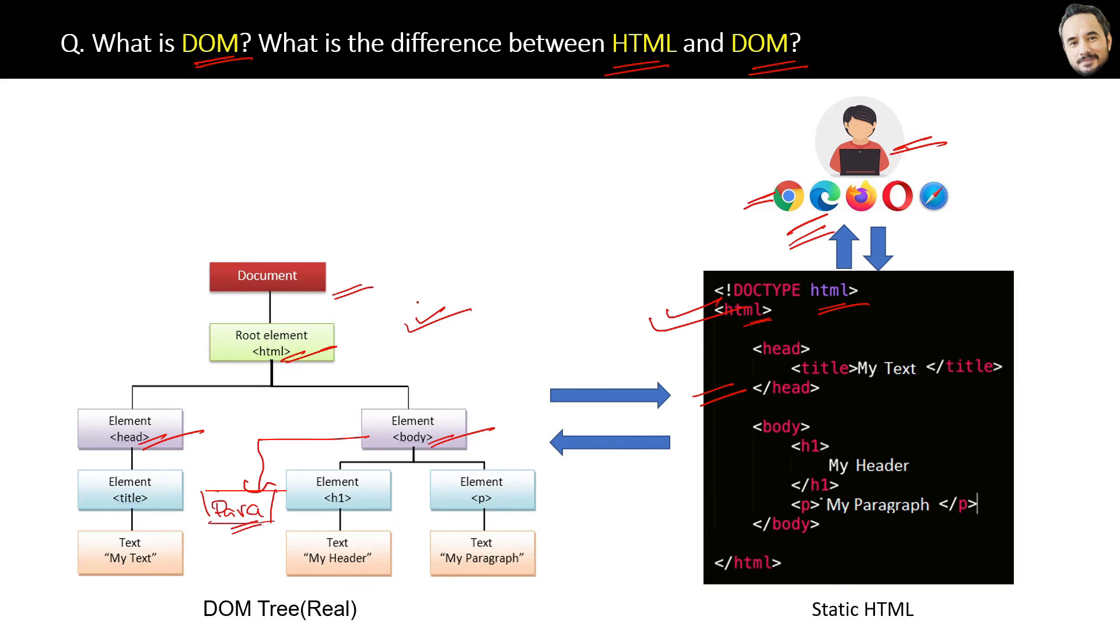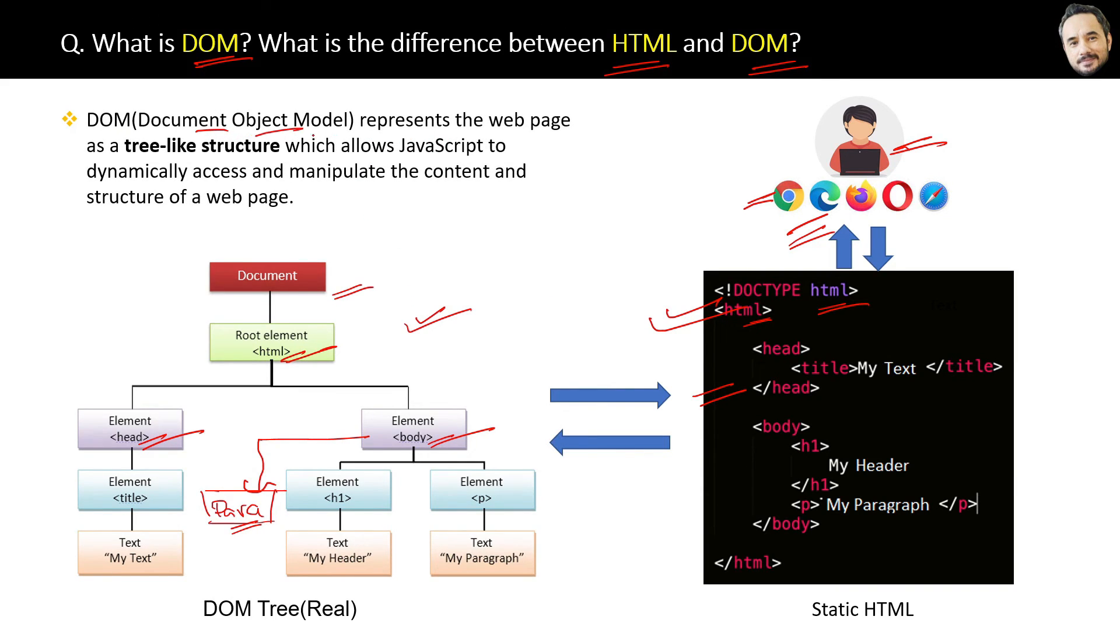Finally, the proper definition of DOM is here. DOM, which stands for Document Object Model, represents the web page as a tree-like structure that allows JavaScript to dynamically access and manipulate the content and structure of a web page.